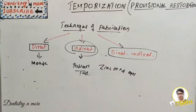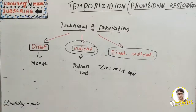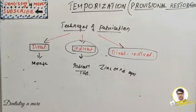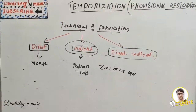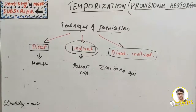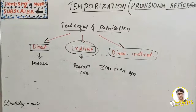The limitations of provisional restorations include lack of adequate strength — fracture is possible in long-span FPDs, in patients with bruxism, and with reduced interocclusal clearance. There can also be inadequate marginal adaptation, poor aesthetics, chances of plaque accumulation, compromised bonding, and mild to moderate tissue irritation.